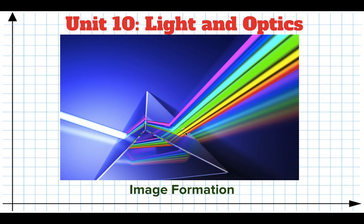We've talked about the fact that we can represent light as a ray and that we can bend light. During the bending of light, the colors actually separate. The bending of light is called refraction and the separating of the colors is called dispersion. So now we're going to look at what you can do with light that you can bend.